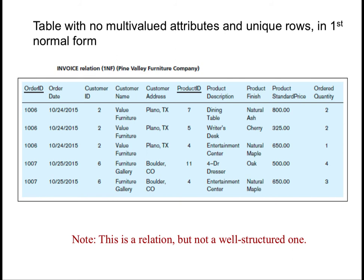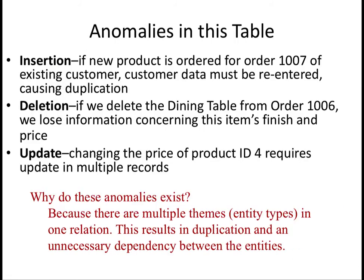However, this is not yet a well-structured database, because now we have anomalies due to data duplication — the same insertion, deletion, and update anomalies we saw earlier. This is because we have multiple themes or multiple entity types in one relation that are determining multiple things, resulting in duplication and unnecessary dependence between those entities.